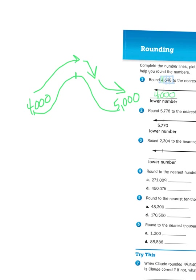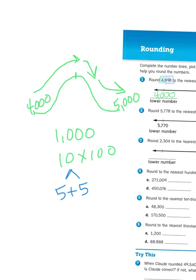The halfway mark would be splitting 1,000 in half. So what is 1,000 split in half? Well, 1,000 is basically 10 groups of 100. If I split 10 in half, 10 is simply 5 plus 5. So if I had 5 times 100, that would give me 500. So one half of 1,000 is 500. We're always looking for the 5 as being the halfway mark.